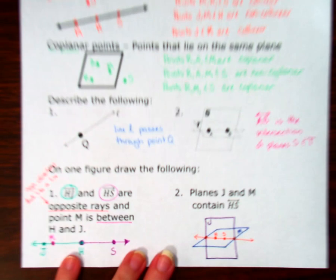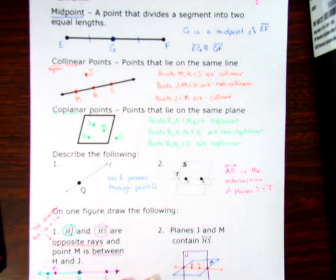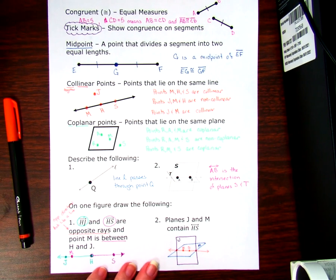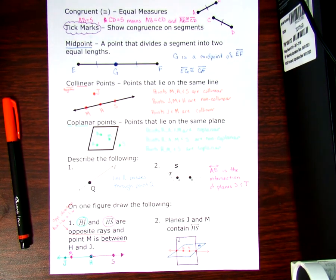So we looked at point relationships, and then we practiced drawing and sketching some figures, and we learned the word congruent, and we know what tick marks are used for to show congruence. All right, thank you for watching.